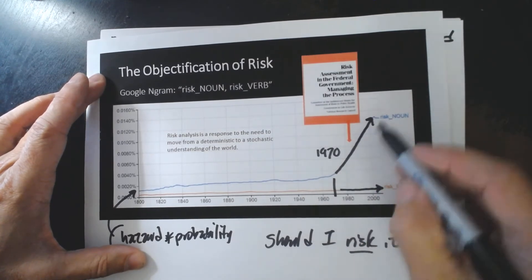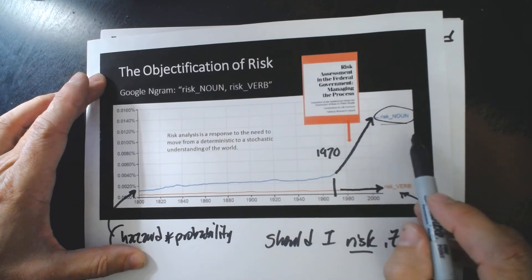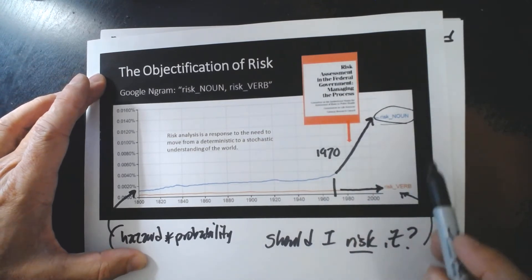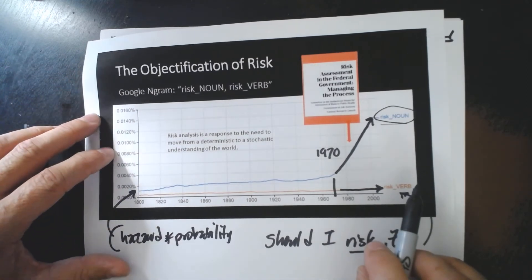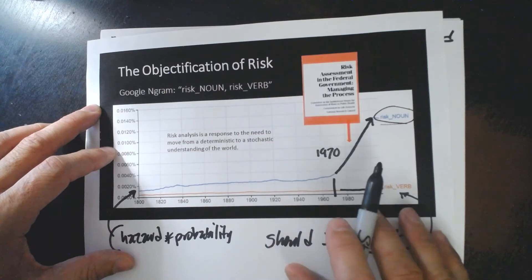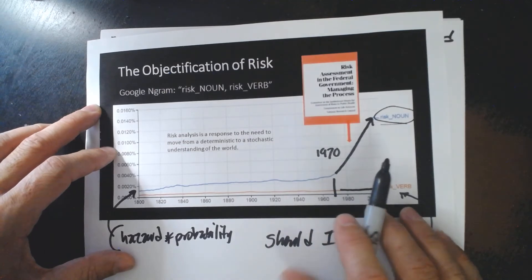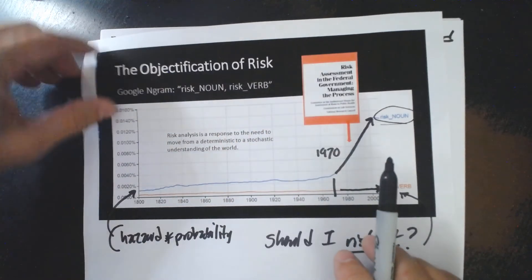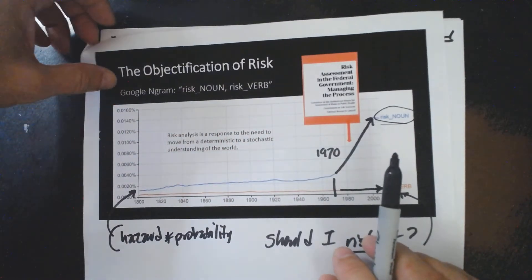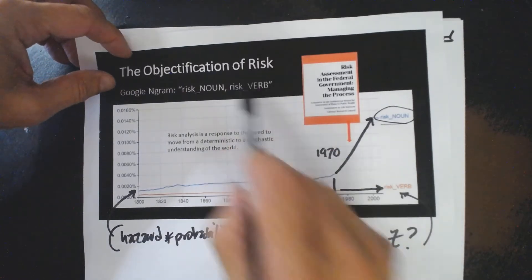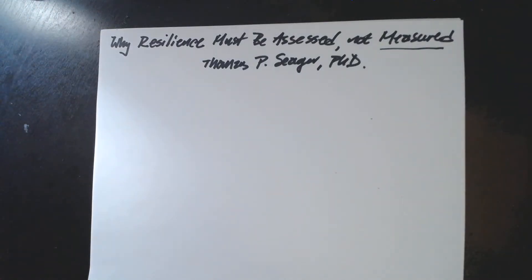It was after 1970 that in science and engineering in particular, risk became understood more and more as a noun and less and less as a verb. So this is our familiar concept. And often when we're talking about resilience, we devolve into the familiar. We wind up having discussions that are really about risk. We don't need a new word. We don't need the word resilience if what we really want to talk about is risk. So it's important for us to differentiate risk from resilience.